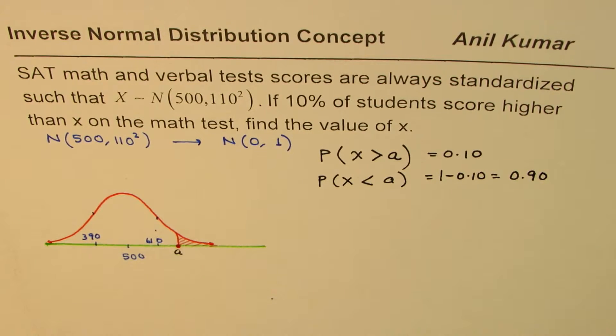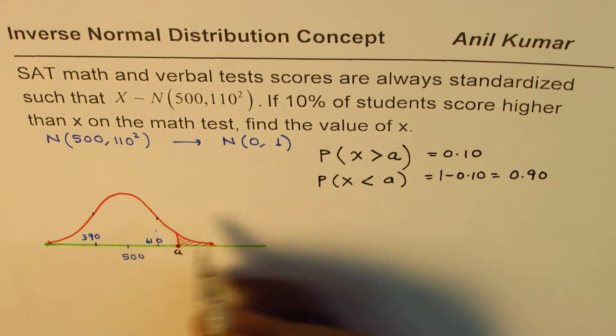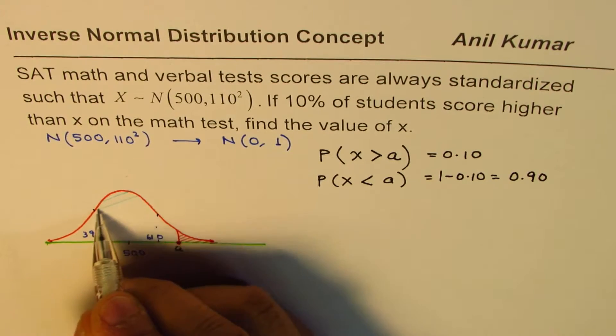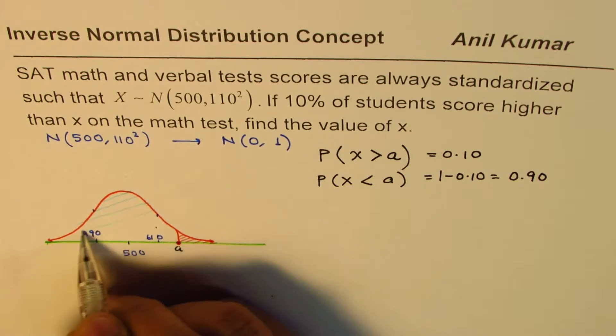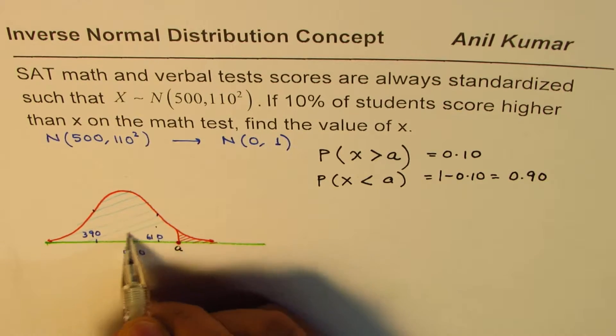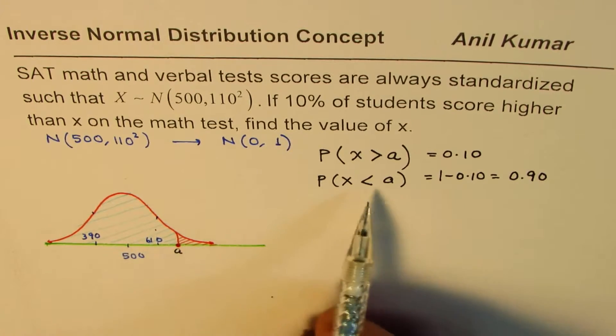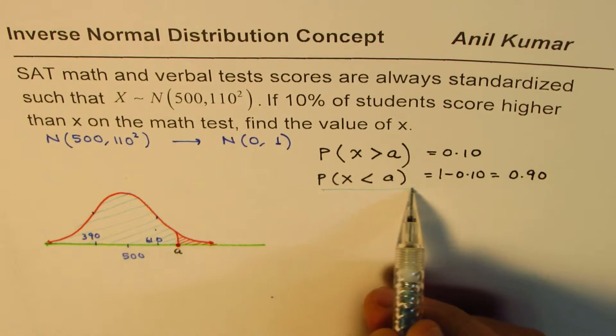So we are seeing from the left side. Less than a means this side, so you see that big area. Most of the students will be scoring less than the top 10% students, which is 90%. So that is what we are now looking into.